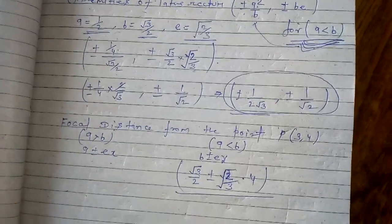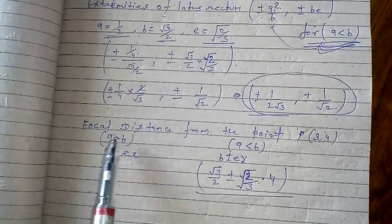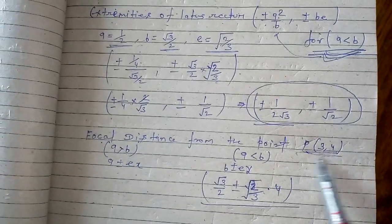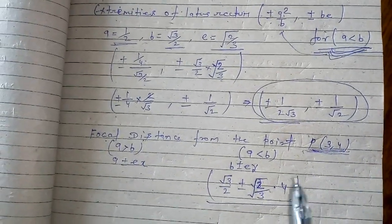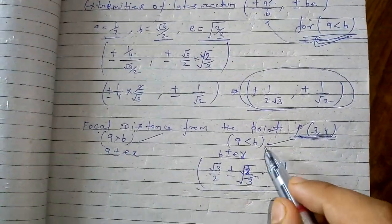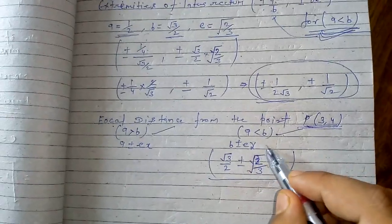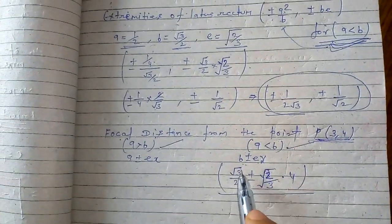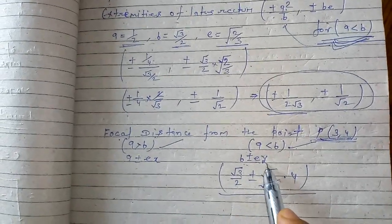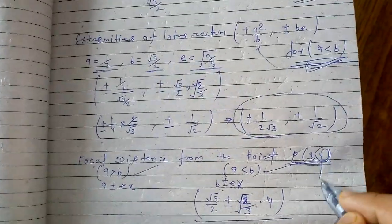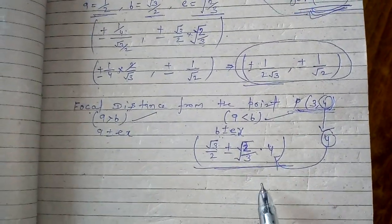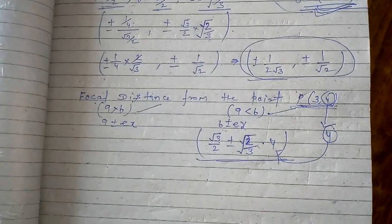If a point P(3, 4) is given and we need to find the focal distance from it, we again check a versus b. Since a is less than b, the formula is b ± ey. With b equal to root 3 by 2, eccentricity equal to root 2 by 3, and y equal to 4, we substitute and simplify to find the focal distance. Thank you for watching.